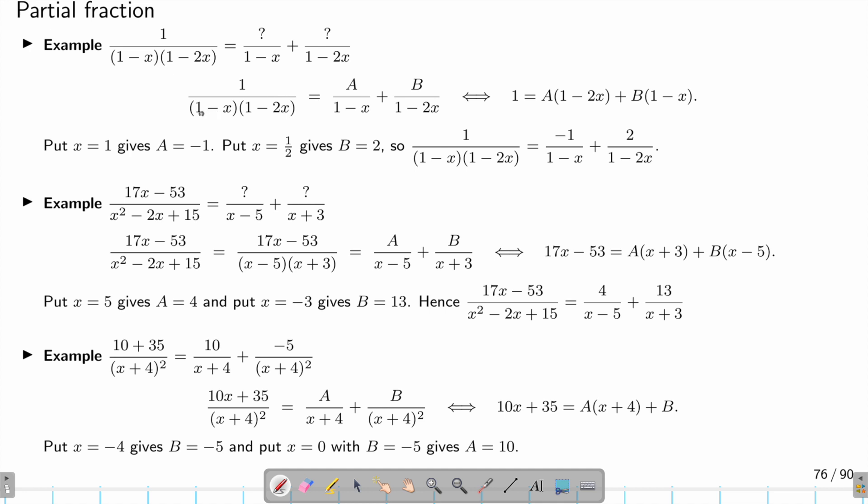And if I multiply the whole thing to this side, I will have (1-x) and (1-2x). These cancel, so I get B times (1-x). Here's an important thing: these are equivalent equations.